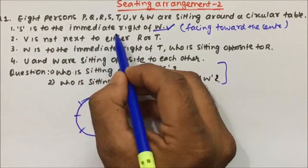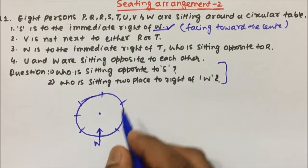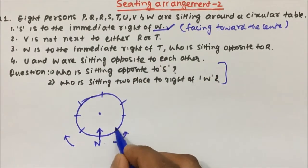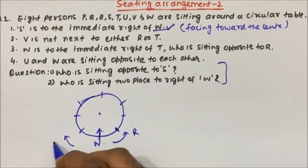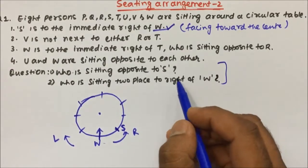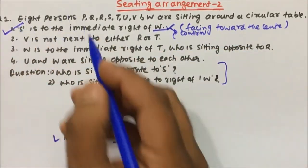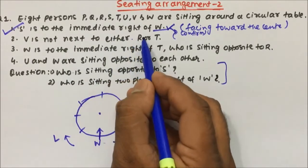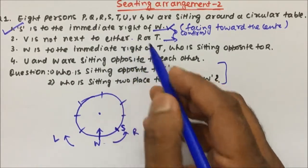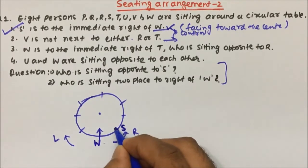S is to the immediate right of W. Let us place W here at the bottom right. Immediate right means the very next person of W — so this is my right side and this is my left side. S will be placed immediately to the right of W. The next statement, V is not next to either R or T, is not a confirmed statement, so we do not know where R and T are sitting yet — we only know the positions of W and S.